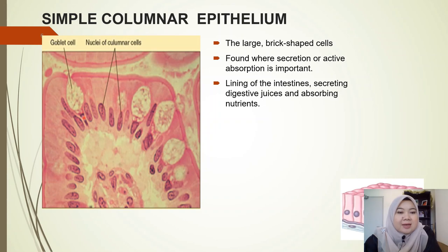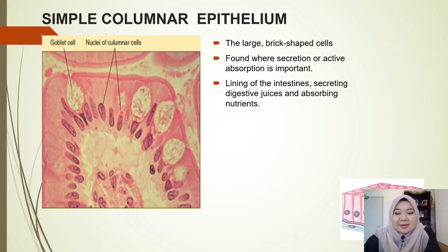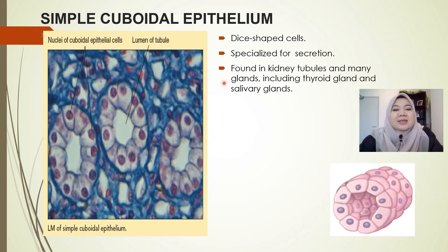You can look at the transmission electron microscopy image to see the tall cells arranged in a single layer. The next one is the simple cuboidal epithelium.